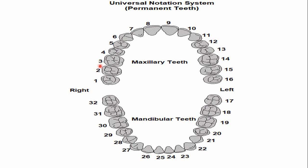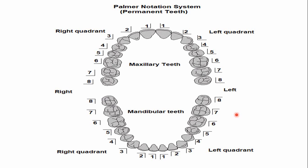In the Universal Numbering System, the number of the maxillary second premolar is four for the right maxillary second premolar and thirteen for the left. The numbering starts from one at the third molar and proceeds in a clockwise direction, giving us numbers four and thirteen.